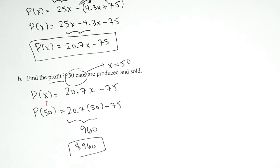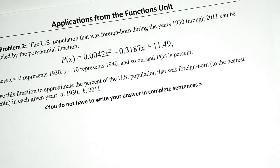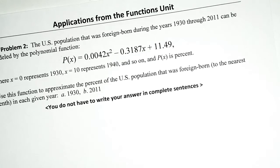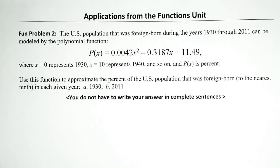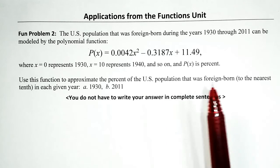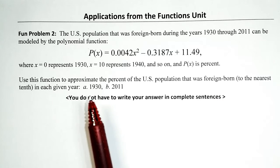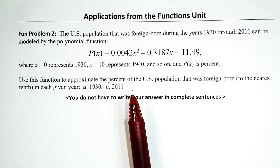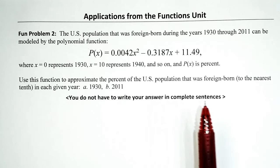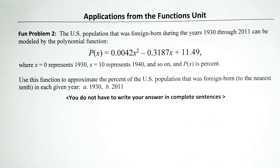That's our first problem — let me move on to fun problem number two. The US population that was foreign-born during the years 1930 through 2011 can be modeled by the polynomial function P of X equals all that good stuff, where X equals 0 represents 1930, X equals 10 represents 1940, and so on, and P of X is percent.